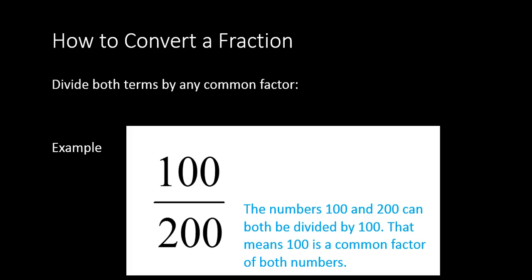Because they can both be divided by one-hundred, it means one-hundred is what we call a common factor. It's something that both numbers can be evenly divided by.